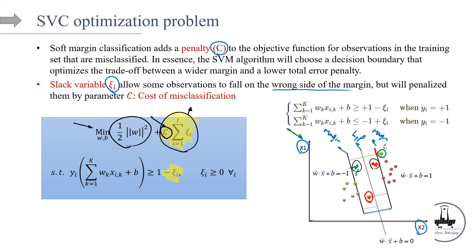Looking at the constraint change: the new part is 1 − ξ_i on the right-hand side. This tells the algorithm: you don't need to be exactly on the right side of the margin — I'm going to give you some slack. So if an observation is within the margin or on the wrong side, we allow it but penalize it. This is the optimization problem for SVC — the idea of soft margin.